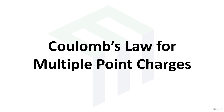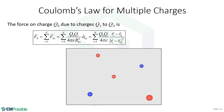Coulomb's law for multiple point charges. Due to superposition, this is going to work exactly like calculating the electric flux due to multiple charges. We will look at each charge one at a time and calculate the force due to it. In this case, we have a charge Q₀ and we'd like to calculate the force on this charge due to the presence of all the other charges — Q1, Q2, Q3, Q4 — calculate the force due to each one, add them all up, and we have the overall force.